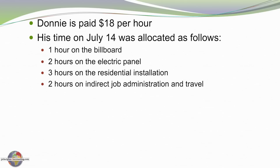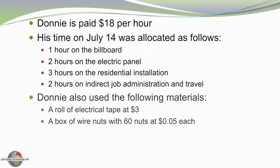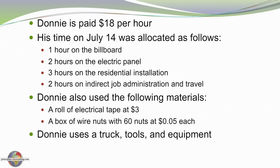Donny also had two hours getting ready at the shop in the morning, driving from location to location, and filling out his time report. He also used some indirect materials — not significant individually, but cumulatively costs can mount up. He used a roll of electrical tape costing $3 and a box of wire nuts — 60 of those at a nickel a piece. Donny also used his tools, truck, and equipment.